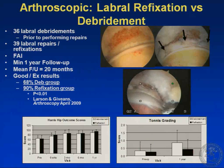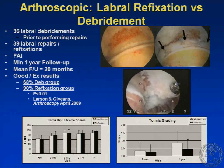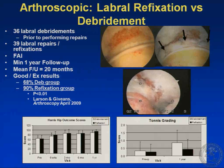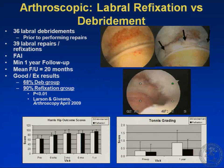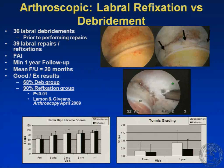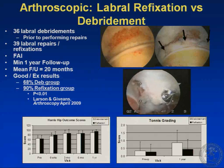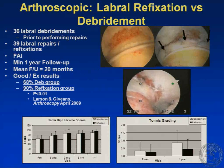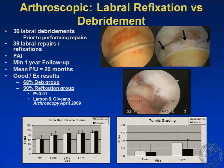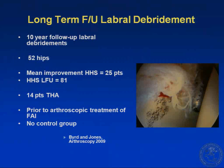We tried to simulate this study using an arthroscopic model. We took 36 labral debridements — all done prior to our ever performing a repair — and looked back at intraoperative images and MRIs to determine whether they would have been repairable with our current techniques. We compared these to 39 labral repairs done afterward. All had FAI, mean follow-up was 20 months, and good-to-excellent results were 68% in the debridement group versus 90% in the refixation group — closely mirroring the previous open study. It is also important to assess and treat any associated impingement to protect the repair.